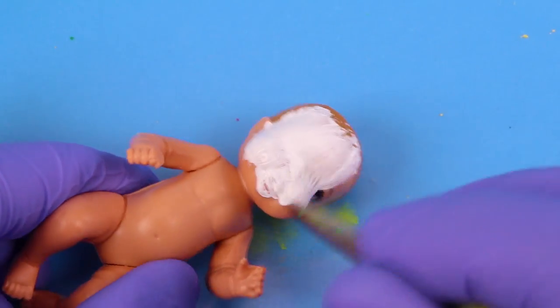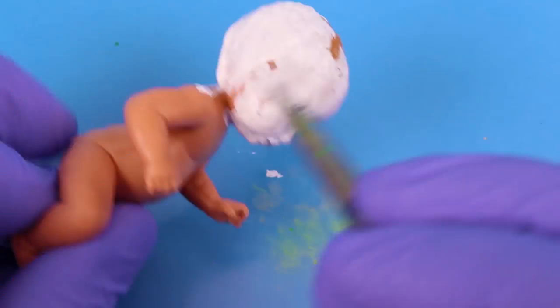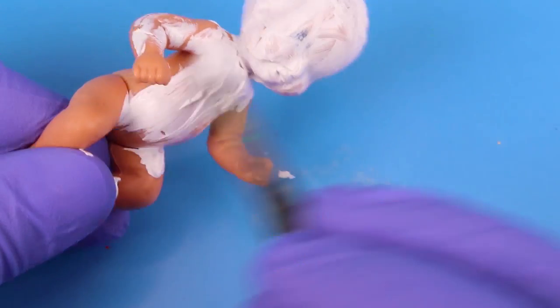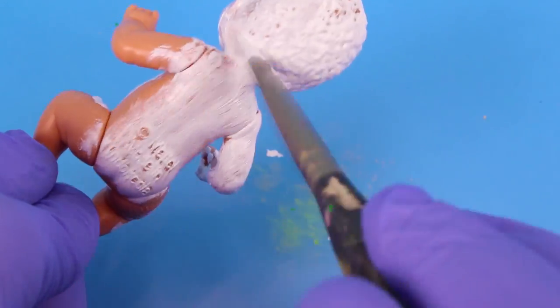The first thing we're gonna do is paint the entire baby white because we need a base coat for the pink paint. If we don't, the pink paint usually takes multiple coats to put on and it just doesn't look as good.